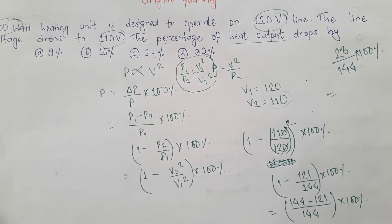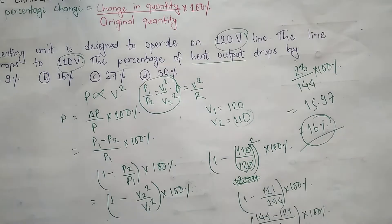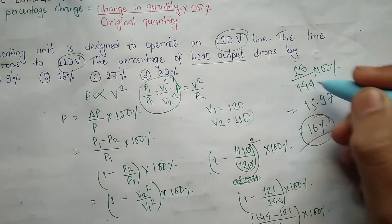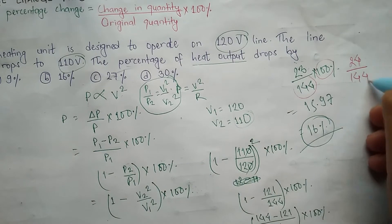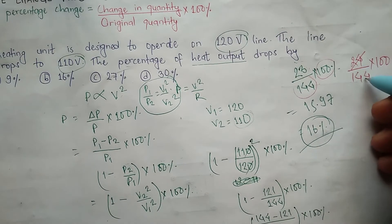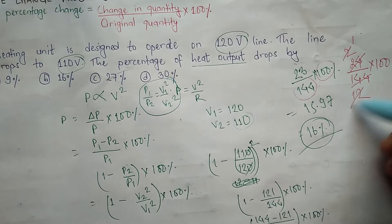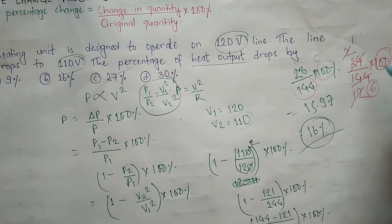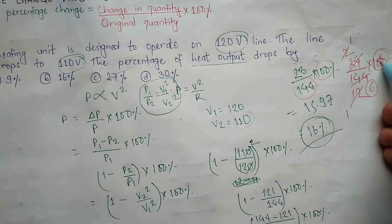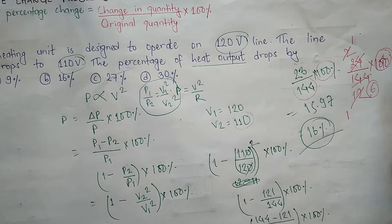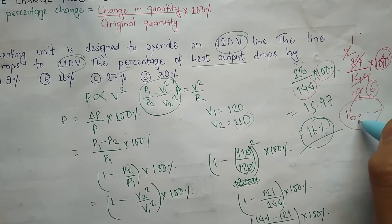Calculating this in a calculator gives approximately 15.97%, which is about 16%. So the answer is approximately 16% drop in heat output.